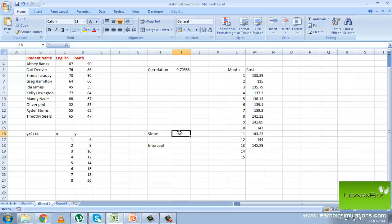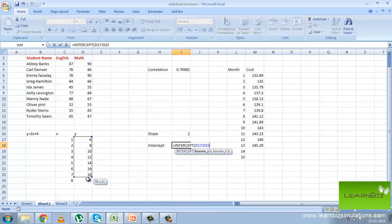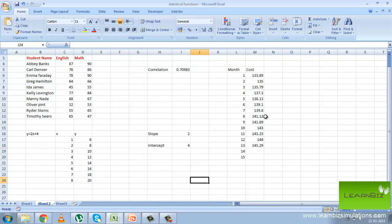Next, we are trying to find the slope for the line y is equal to 2x plus 4, and it gives the value 2. Next, we look at the intercept. So this is where the line meets the x axis. Next, we look at the trend function.